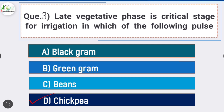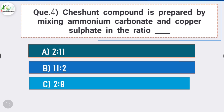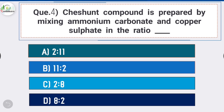Question number three: late vegetative phase is the critical stage for irrigation in which of the following pulse? Answer is option D - chickpea. Late vegetative phase is the critical stage for irrigation in chickpea. Question number four: session compound is prepared by mixing ammonium carbonate and copper sulfate in the ratio - answer is option B - 11:2.